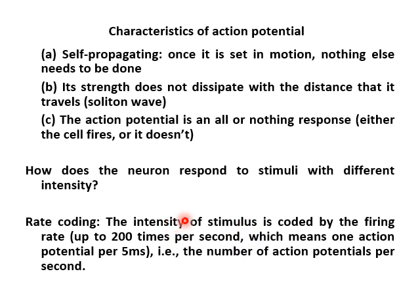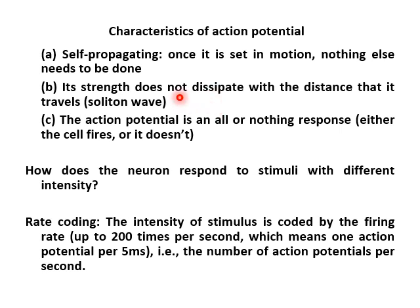This slide shows some characteristics of action potential. The first is that it is self-propagating, which means once it is set in motion, nothing else needs to be done — once the neuron fires, the spike will travel to the end of the axon. The second aspect is that the strength doesn't dissipate with distance; the action potential is a kind of soliton wave, traveling to the end of the axon regardless of axon length. The third characteristic is that the action potential is an all-or-nothing response — either the cell fires or it doesn't.